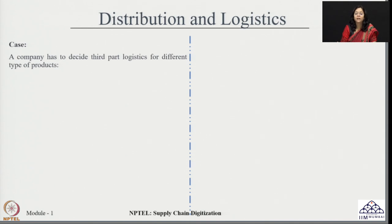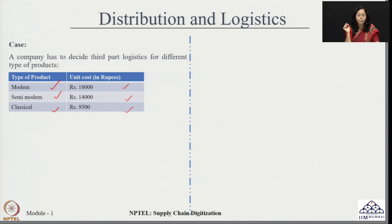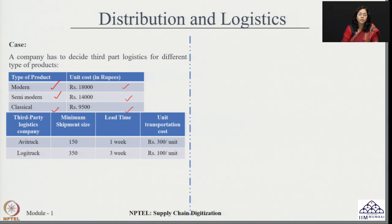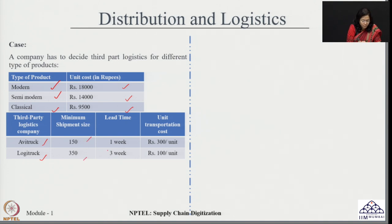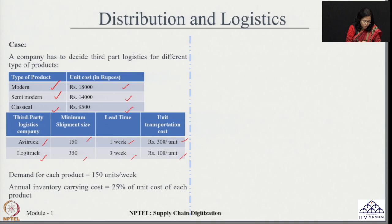Consider a company that has decided to use third-party logistics for three different types of products: modern, semi-modern, and classical. Their unit costs are rupees 18,000, rupees 14,000, and rupees 9,500 respectively. The company must decide which logistics company to hire from two options — avitruck and logitruck — given information on minimum shipment size, lead time, and unit transportation cost. Demand is assumed constant at 150 units per week, and the annual inventory carrying cost is 25 percent of unit cost for each product.